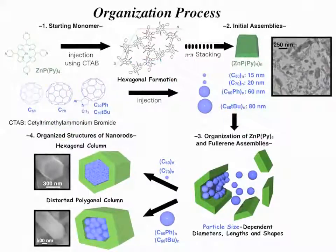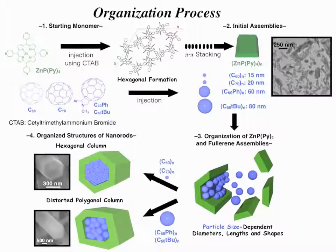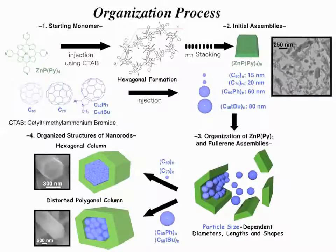Regarding the organization process: first, we prepare a DMF solution of zinc porphyrin with 4 pyridyl units and a fullerene derivative. The DMF solution was injected into CTAB acetonitrile solution. Then, porphyrin flake assembly and fullerene spherical nanoparticles are separately formed. After the organization process, we can see the organized fellowship structure.